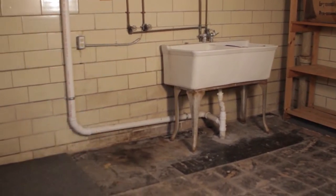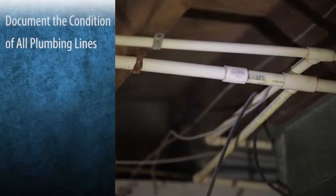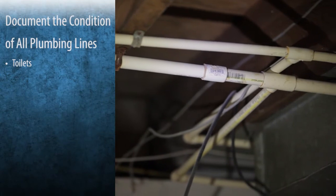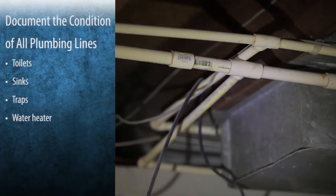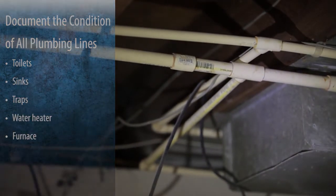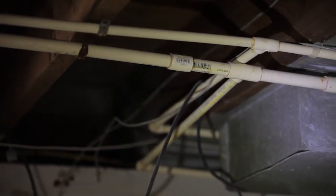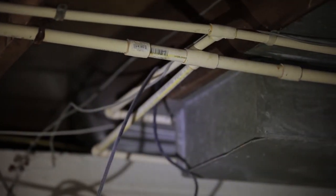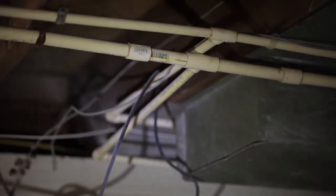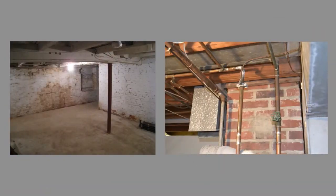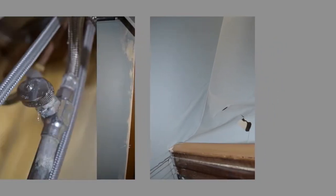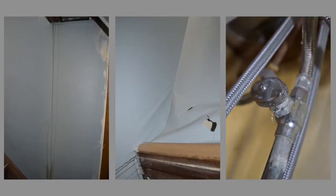Other photos to include should document the condition of all plumbing lines, such as toilets, sinks, traps, the water heater, and furnace. These photos should be taken whether there is damage or not, to provide documentation of the condition of the visible plumbing lines. Support structures and posts in the basement should also be photographed. Zoomed out and close up photos of any interior or exterior damages are required. Be sure to include photos of the source that caused the damage.